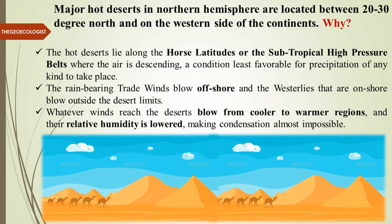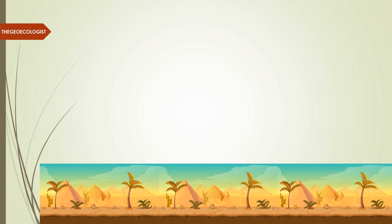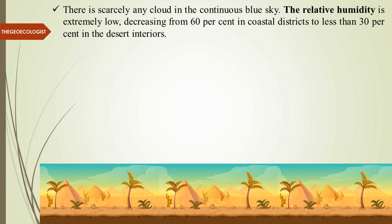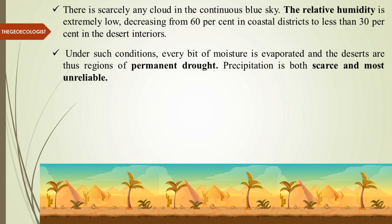Winds blow from cooler to warmer regions because of the low pressure in warmer areas. The relative humidity is lowered, making condensation almost impossible. There is scarcely any cloud — continuous clear blue sky. Relative humidity decreases from 60% in coastal districts to less than 30% even in desert interiors, causing every bit of moisture to evaporate. Deserts are regions of permanent drought.